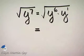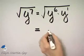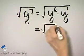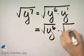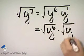Then, by the product rule for radicals, I can write this as the square root of y to the 6th times the square root of y to the 1, or simply y.